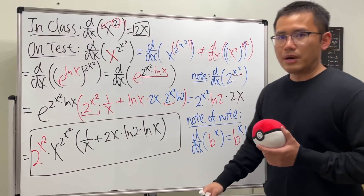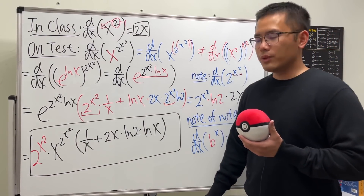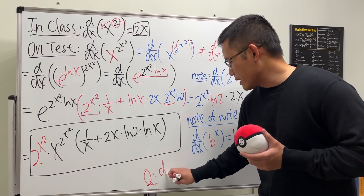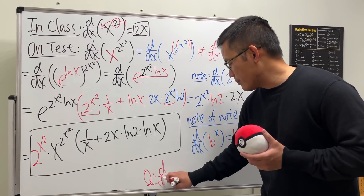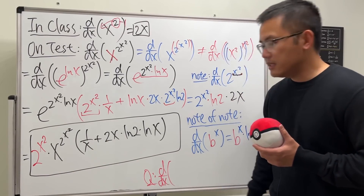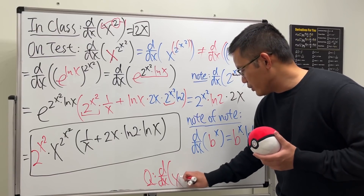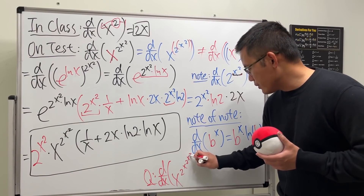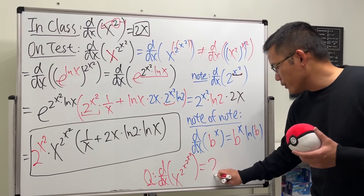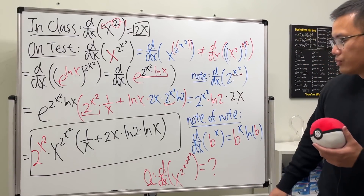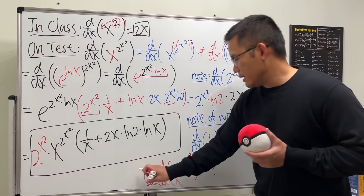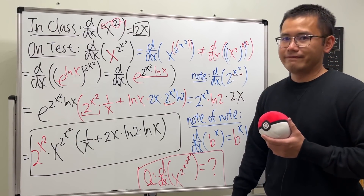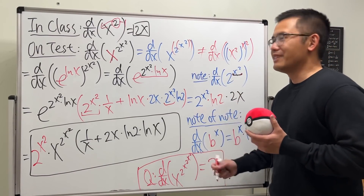If you want to know what will be on my final exam, here it is: let's do x^(x^(x²)). So if you want to get two points on the final exam, you'll need to handle that. Anyway, that's it for this video.